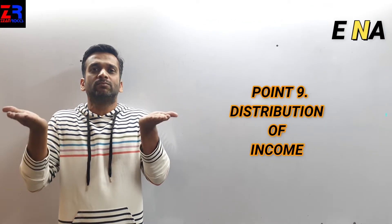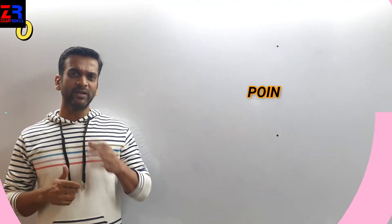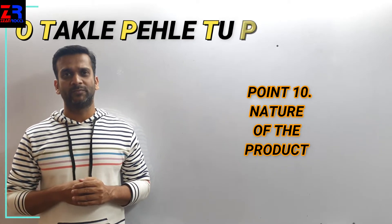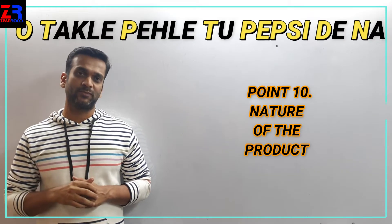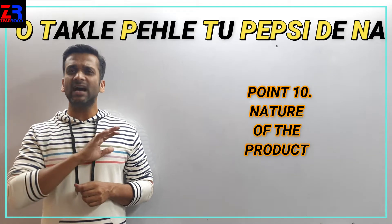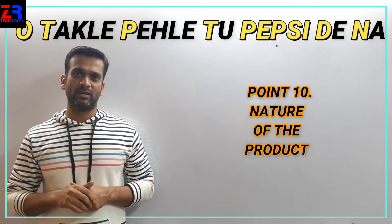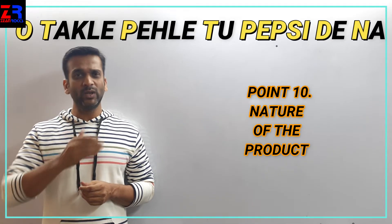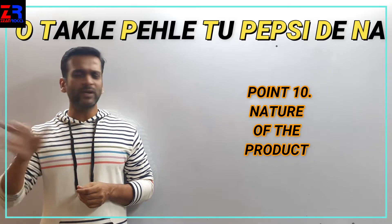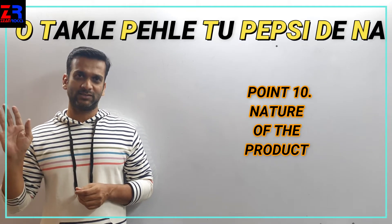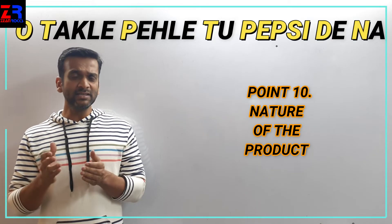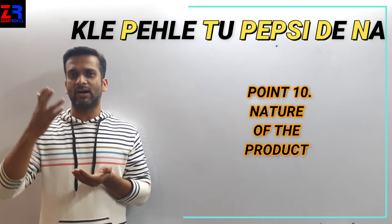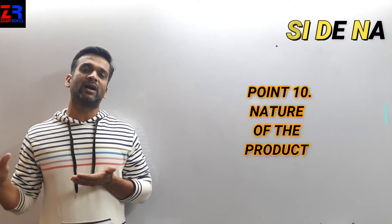Point number ten is the Nature of the Commodity. If the commodity is a necessity product and its use is unavoidable, then the demand for that product will continue irrespective of the price. For example, medicines — whether the price of medicines is low or high, it won't significantly affect the demand for the product.